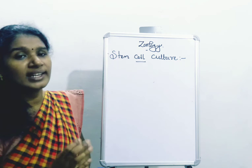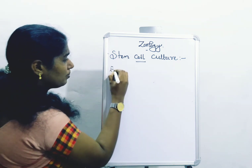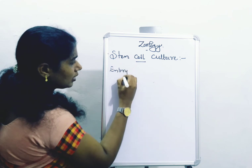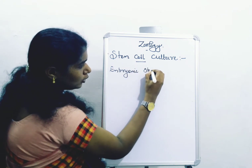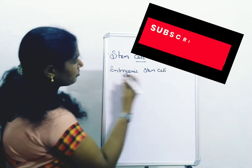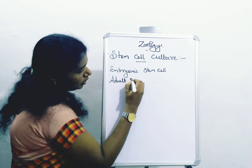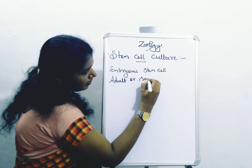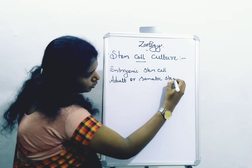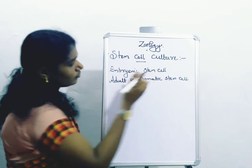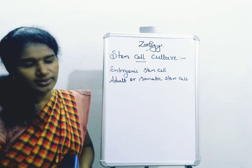The stem cells are classified into two types. The first one is embryonic stem cell. The other one is adult or somatic stem cell.